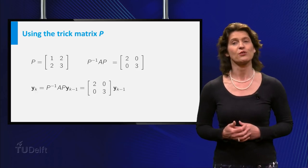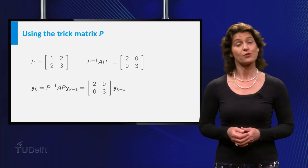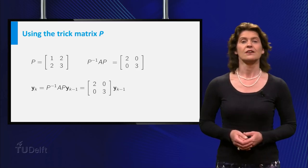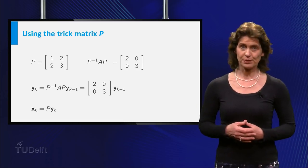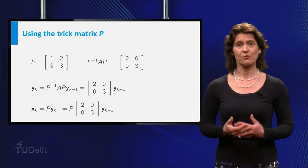So finding a formula for yk is easy, just like in our first example. So you found yk now, and because xk is equal to P yk, you can compute xk from this.